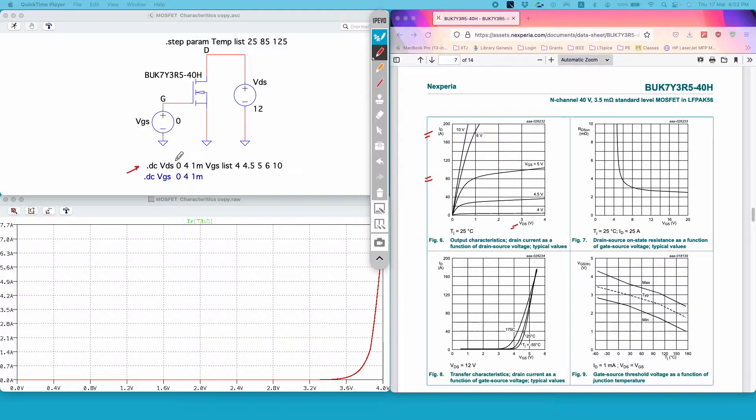Sweep on drain to source voltage from 0 volts to 4 volts in the increment of 1 millivolt and I am doing this for five different values of VGS: 4 volts, 4.5 volts, 5 volts, 6 volts and 10 volts to match the data sheet plot.